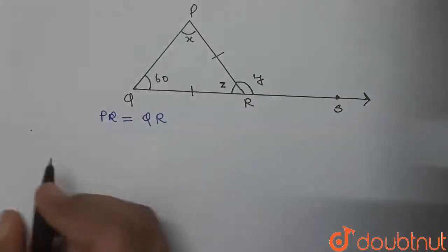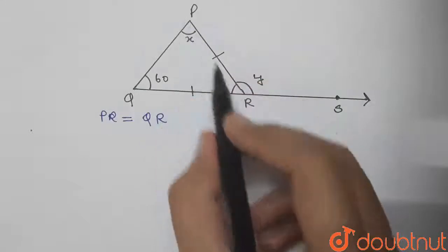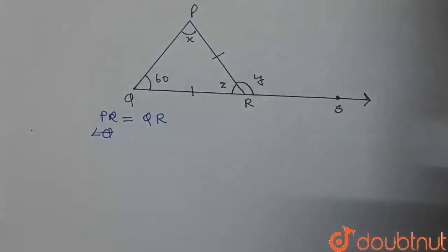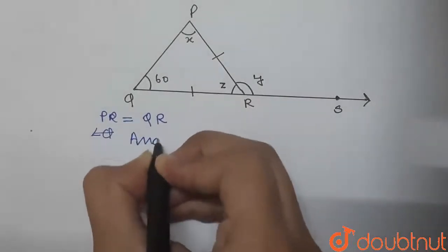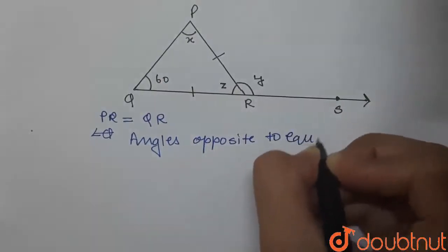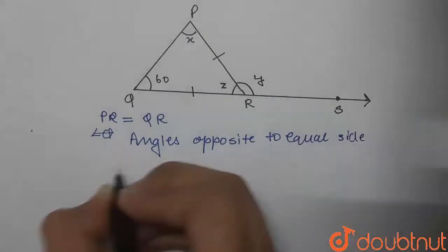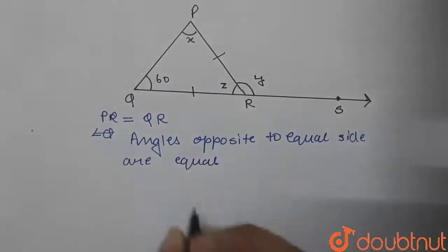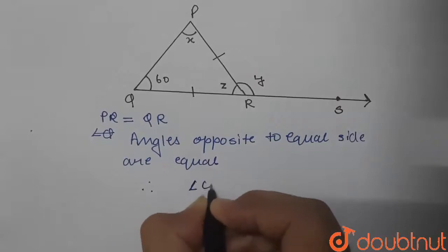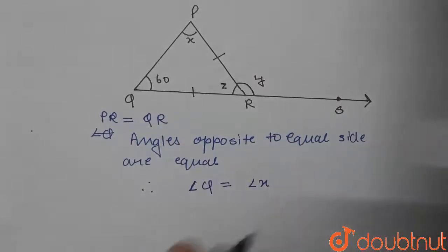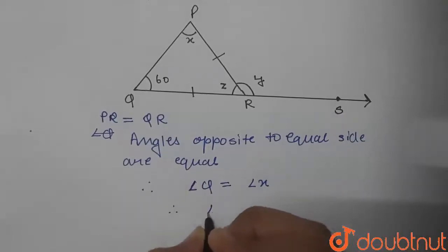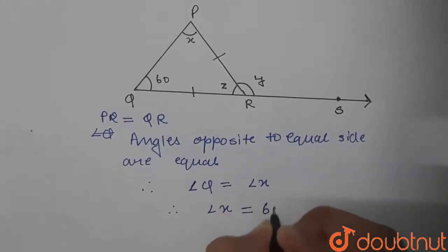We know a property of triangles which says that angles opposite to equal sides are equal. The angle opposite to side PR is angle Q, and the angle opposite to side QR is x. So by this property, angle Q will be equal to angle x.